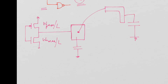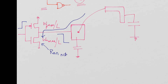Let's assume you have an inverter and a rising edge at the input — so the output side is supposed to fall. What it does is basically discharge this capacitance towards ground using the R_on of the N-channel device. The time constant T equals R_on of the N-channel multiplied by the total capacitance C — the sum of all the load capacitances. But that's not the main issue we're talking about here.